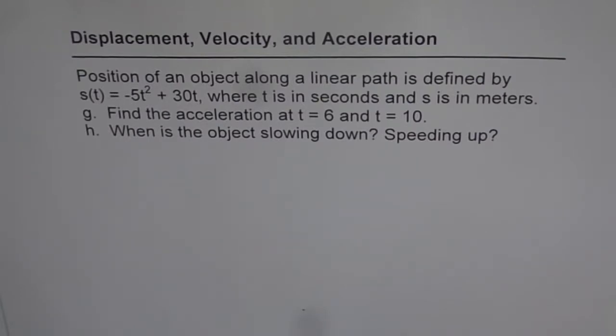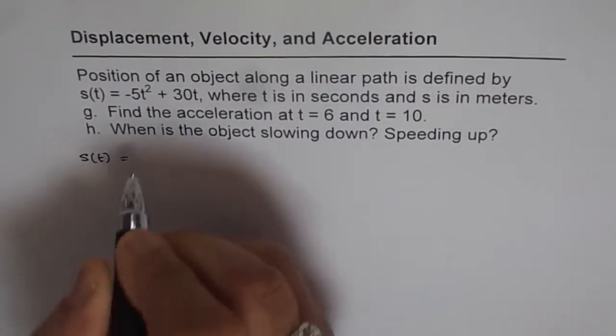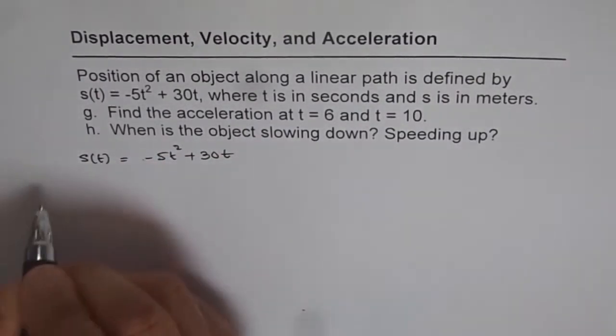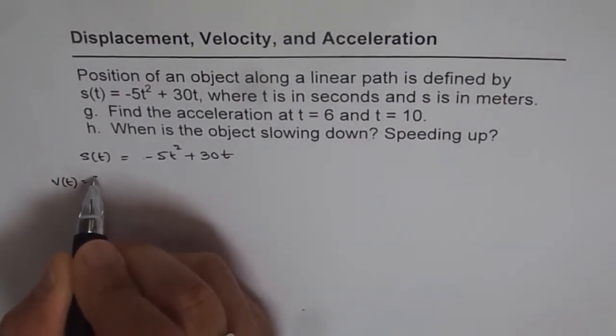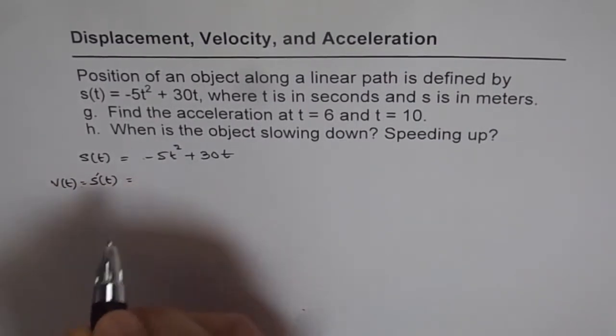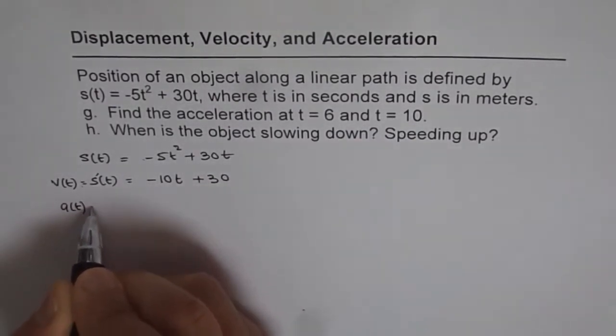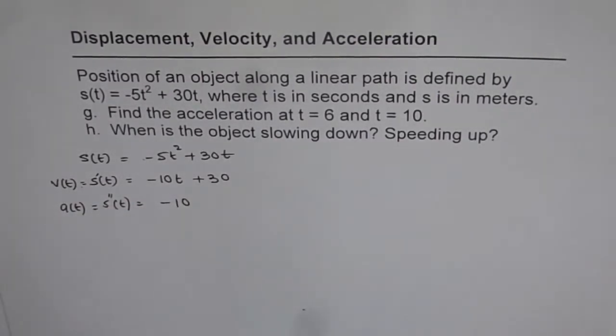Now we're introducing acceleration and understanding when you're really accelerating—slowing down or speeding up. So we have s(t), the displacement as -5t² + 30t. Velocity is the first derivative of displacement, so we get v(t) = -10t + 30. Acceleration is the second derivative, so a(t) = -10. We get all three in one shot. It's simple.